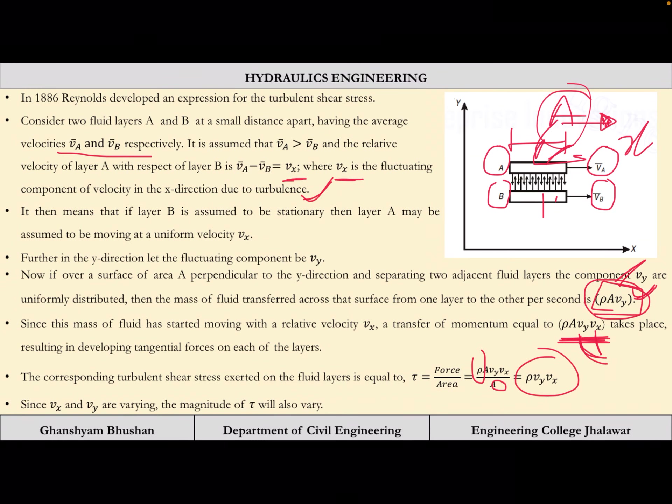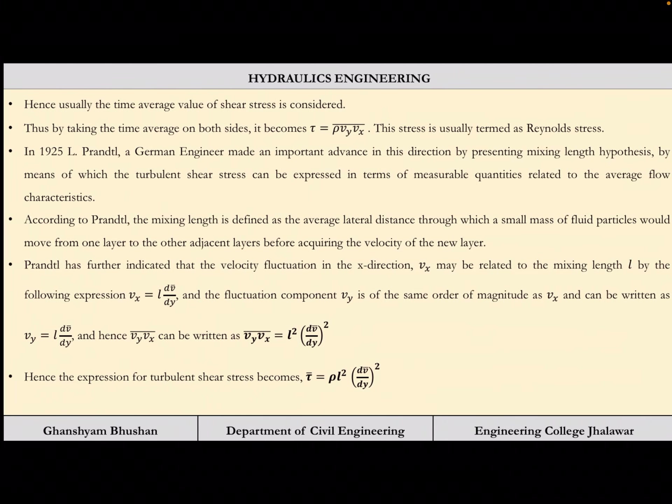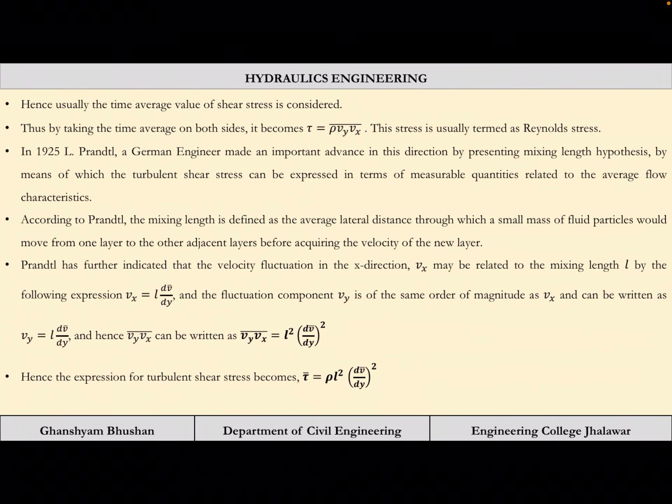Since vₓ and v_y are not constant, τ is also a varying quantity. Hence usually the time-average value of shear stress is considered. Taking the time average on both sides, it becomes τ = ρ · v̄_y · v̄_x (mean of the product). This stress is usually termed as Reynolds stress.